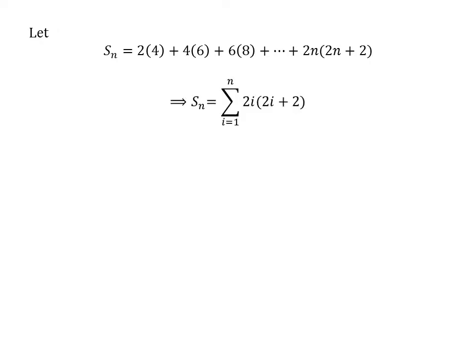The summation form of the series is sigma, i from 1 to n, of 2i times (2i plus 2).